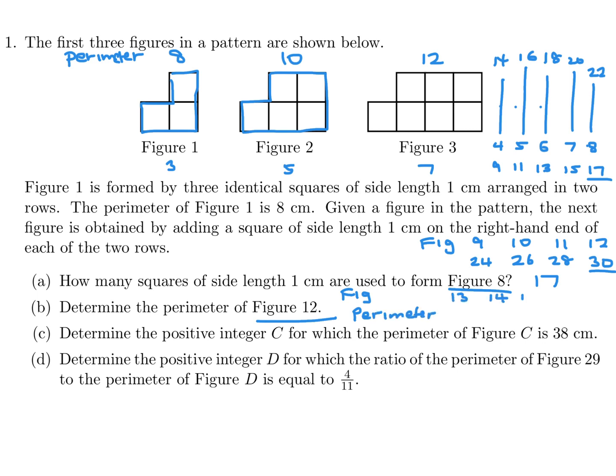13, 14, 15, 16, 17. Let's see what happens. So this would be 32, 34, 36, 38. So Figure C is Figure 16. So C equals 16.